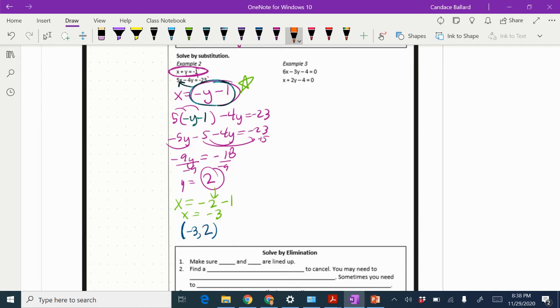Let's go ahead and try example 3 as well. In example 3, I noticed that this second one has a coefficient of 1 for the x. So I'm going to move both the 4 and the 2y to the other side. I'm going to subtract the 2y and add the 4.